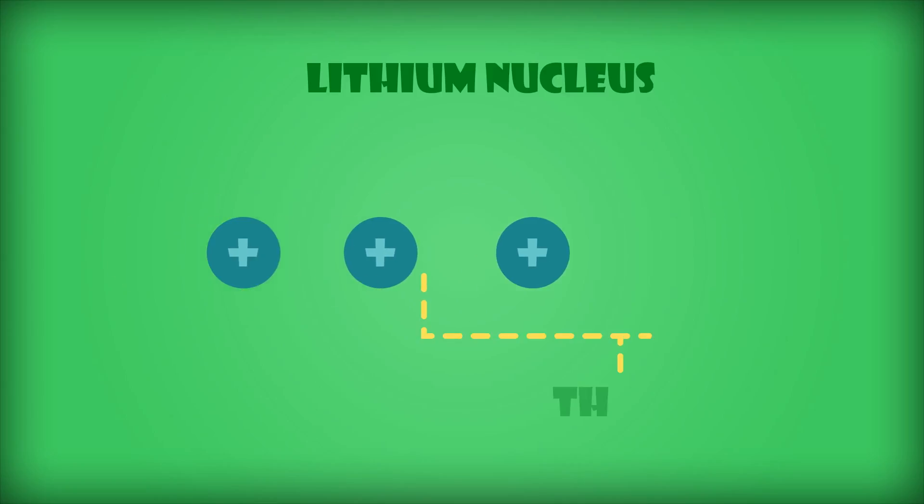All nuclei of a given element have the same number of protons. All lithium nuclei, for example, have a total of three protons. The number of protons in the nucleus of an element is given by its atomic number. So lithium has an atomic number of three, which is generally indicated by the symbol Z. The periodic table is actually in order of increasing atomic number.